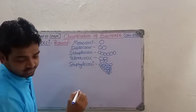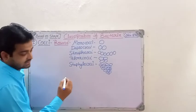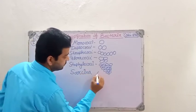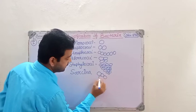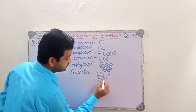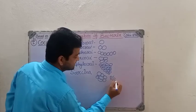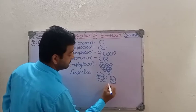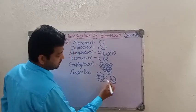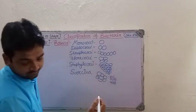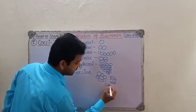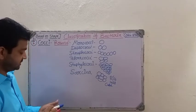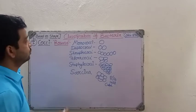The next one is sarcina. In sarcina, they form a packet in such a way that it is going to have eight or sixteen cells, arranged into a particular cube-like structure. So this is a different arrangement compared to the others.